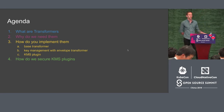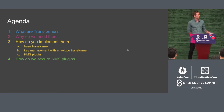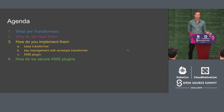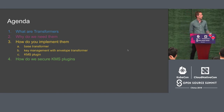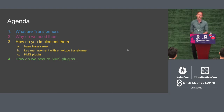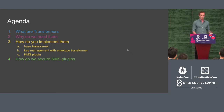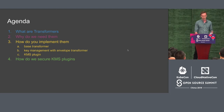We'll start from a base transformer built into Kube API server, then cover two envelope transformers that help with key rotation and management, then KMS plugins. And lastly, I want to talk a little bit about how we secure KMS plugins that we end up with at the end.